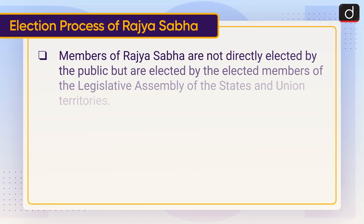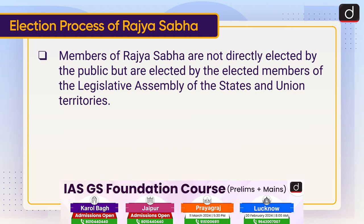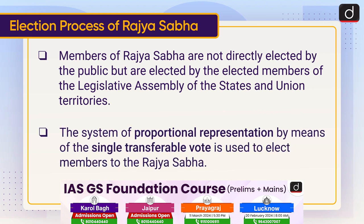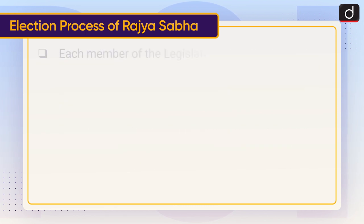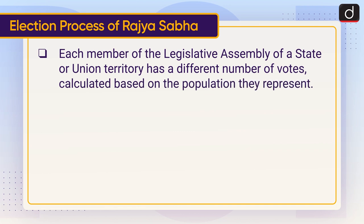Members of Rajya Sabha are not directly elected — they are elected by the elected members of the Legislative Assembly of the states and Union Territories. The system of proportional representation by means of the single transferable vote is used to elect members to the Rajya Sabha. Each member of the Legislative Assembly of a state or Union Territory has a different number of votes,